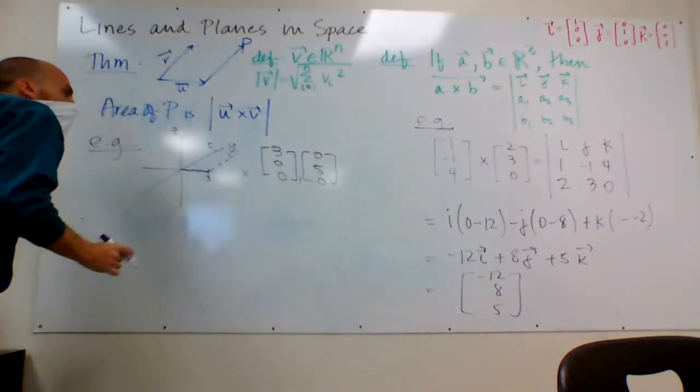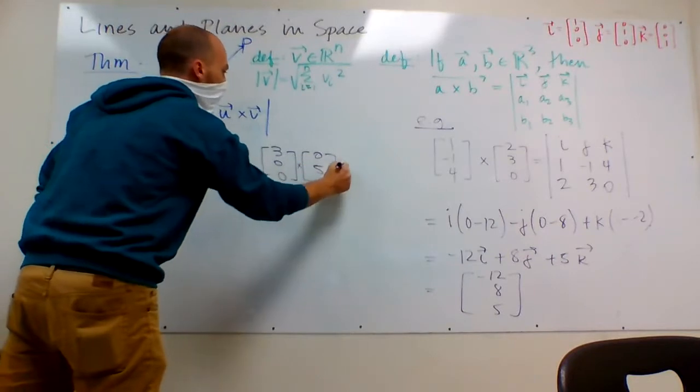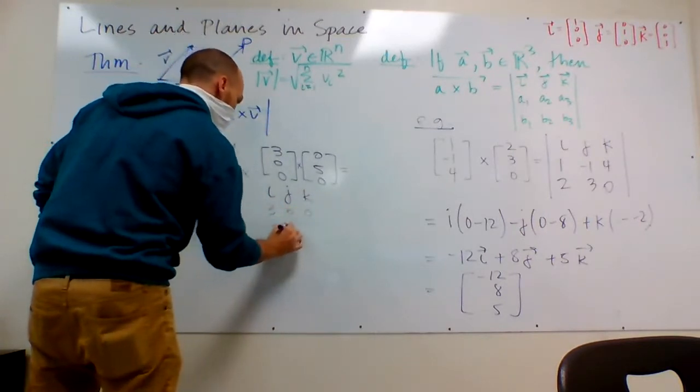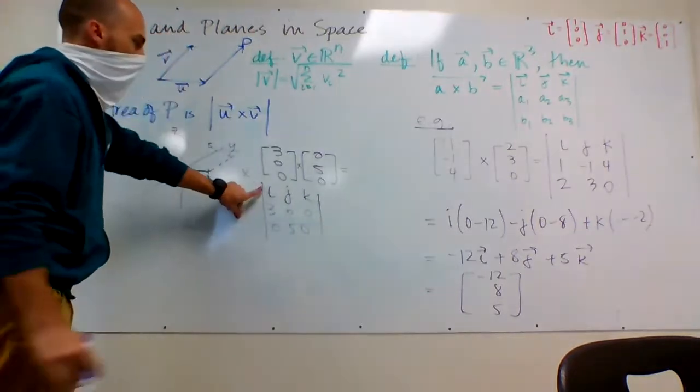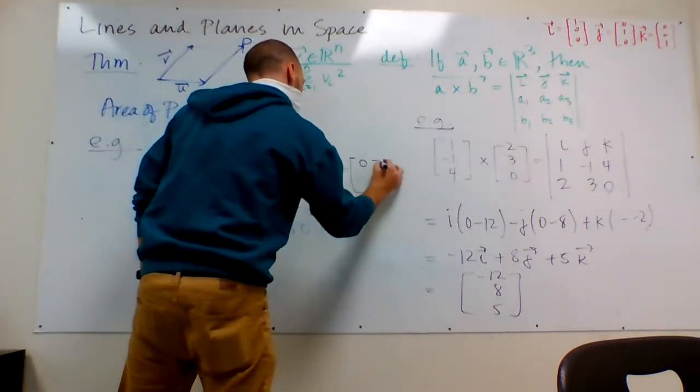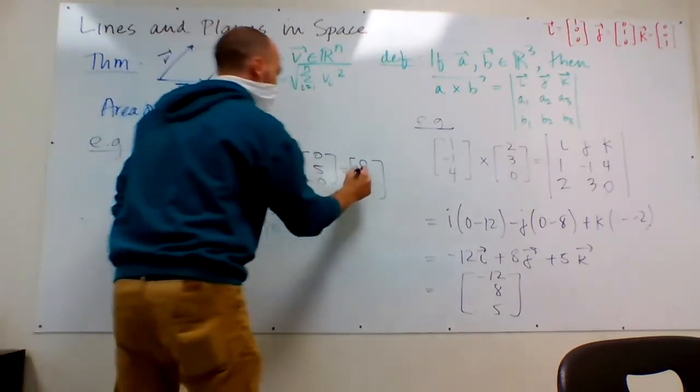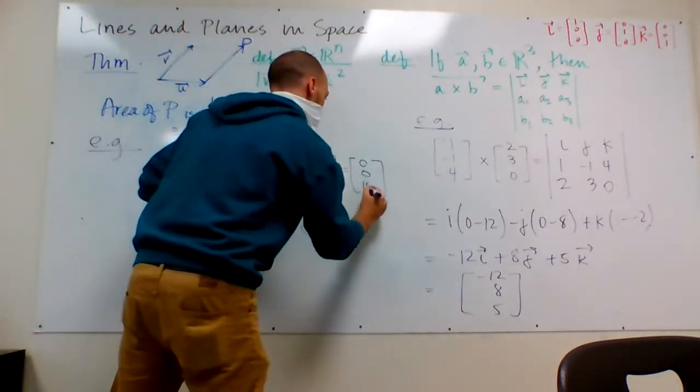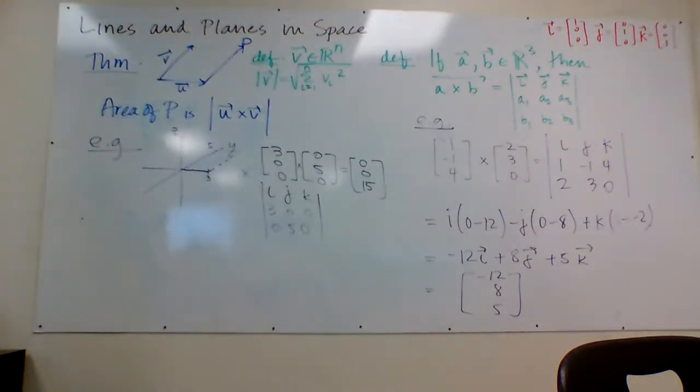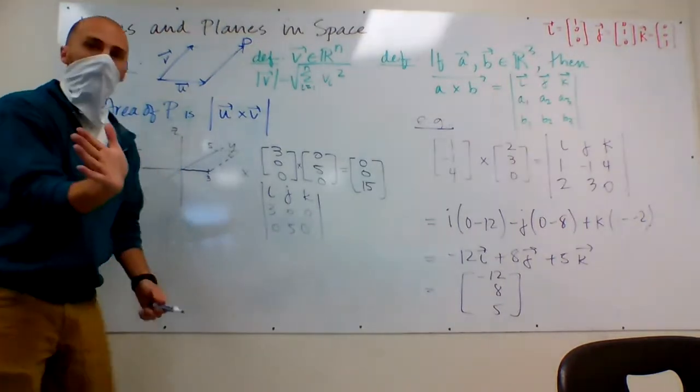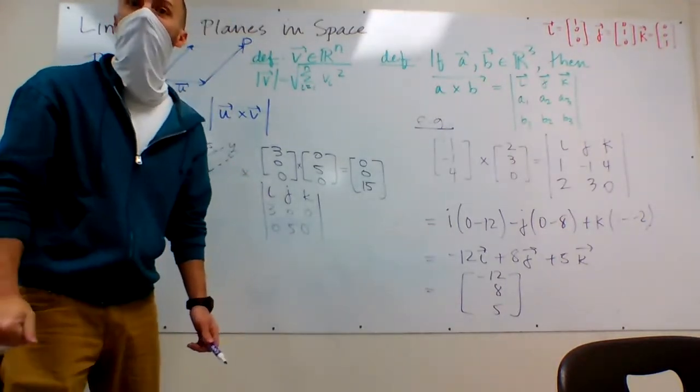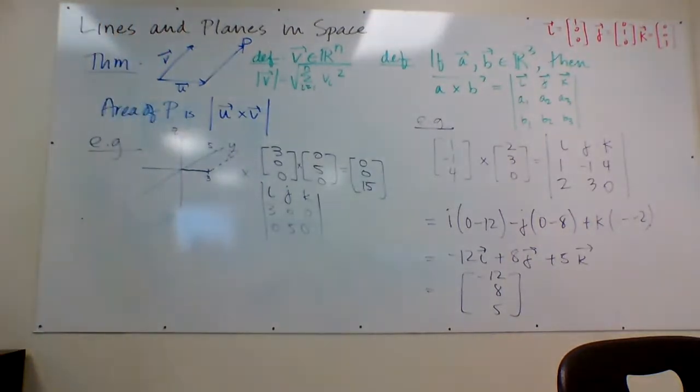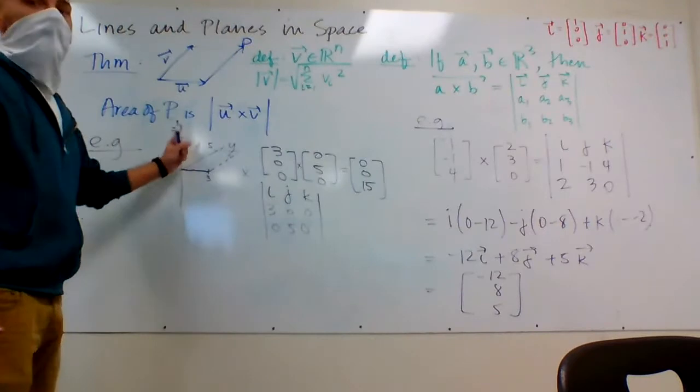Okay, so I'm going to cross them. And maybe I'll just say that if I cross them, and I'll do the calculation over there. 3, 0, 0, 0, 5, 0. Just do this real quick. i times 0 minus 0. Minus j times 0 minus 0. Plus k times 15 minus 0. Okay, and if you look at it and you think about it for a second, that should make sense, right? That we cross something on the x axis with something on the y axis, and we get something that goes in the positive z direction. If you're fluent with the right-hand rule.